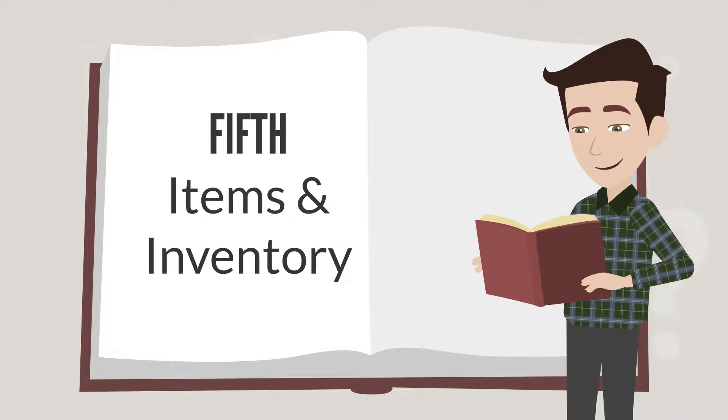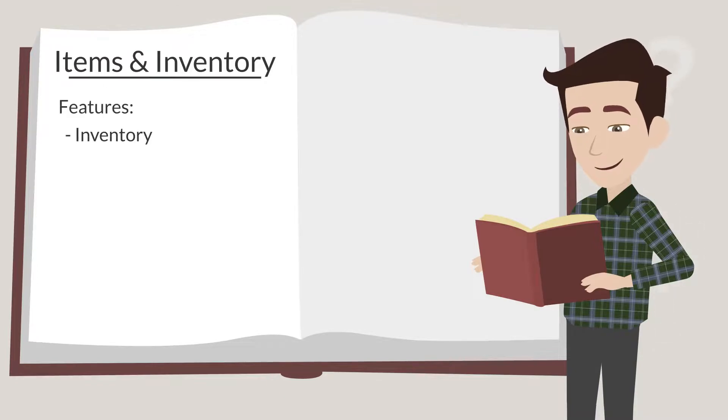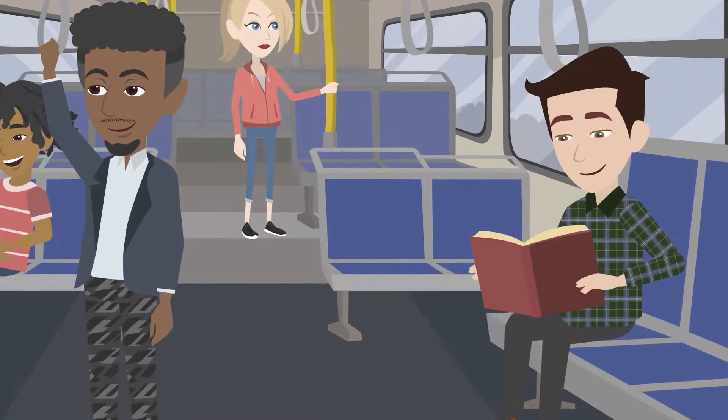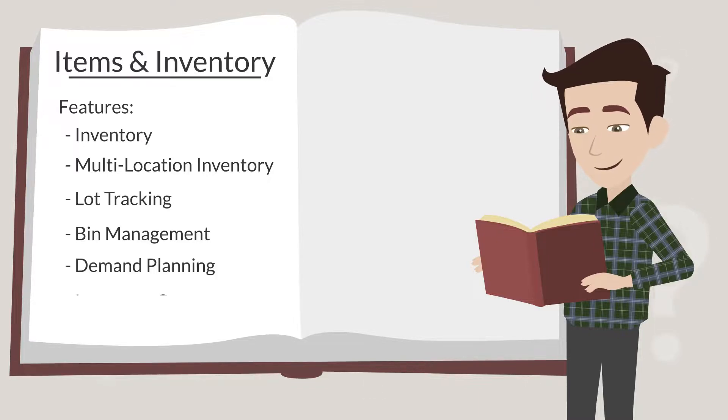Items and inventory, as the name suggests, has only two sections: items and inventory. One of the key features is inventory. If you plan for NetSuite to track your inventory at all, enabling this feature would be a good place to start. This feature includes anything in your inventory, whether those items are finished goods or parts. Some other key features include multi-location inventory, lot tracking, bin management, demand planning, and inventory count.